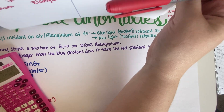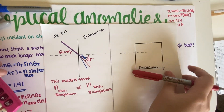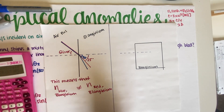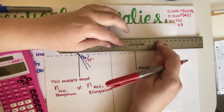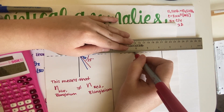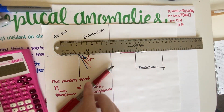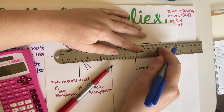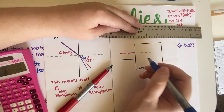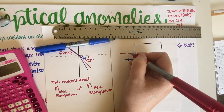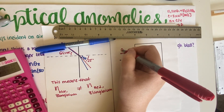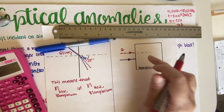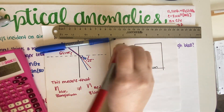In the second experiment, she shines a mixture of both colors at normal incidence — zero degrees — on the blindgenium block. Normal incidence means the ray and the perpendicular to the surface are the same, so the incidence angle equals zero.